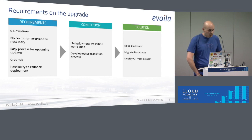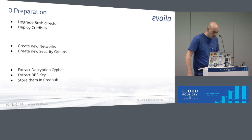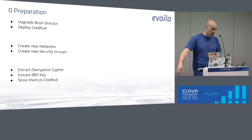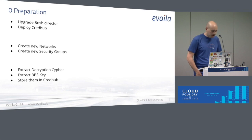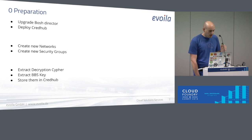So we developed another process. We wanted to keep the blob store as a shared dependency, so we can switch back and forth between our two deployments. We migrated databases and deployed a new CF foundation from scratch. First, we had to do some preparations: we upgraded the Bosh director, which was also outdated, deployed a CredHub, created a new network for the new CF deployment, and adapted the security groups. Then we had to extract some properties from the old deployment — like the decryption cipher and the BBS key — and stored them in CredHub.